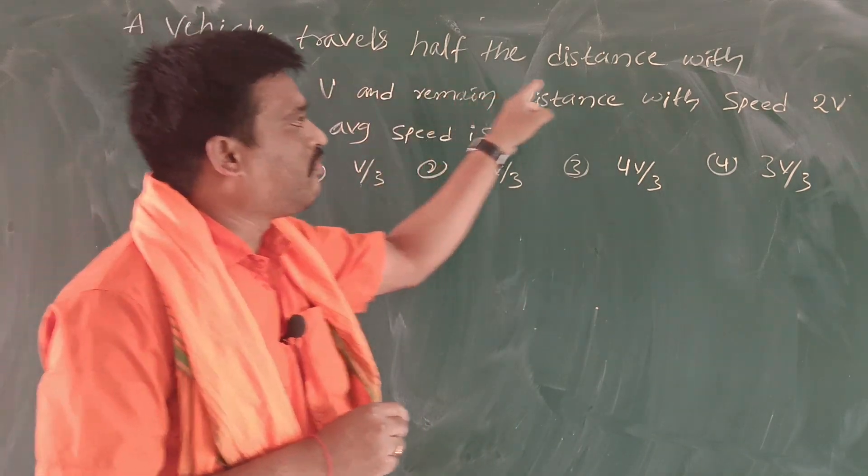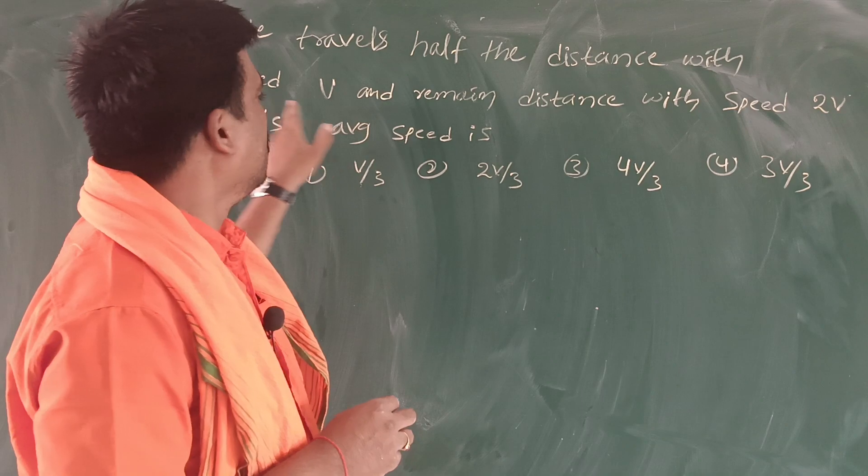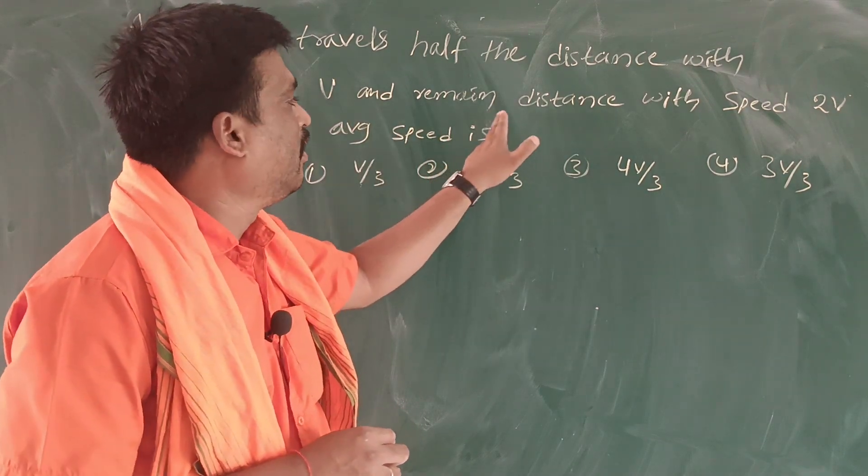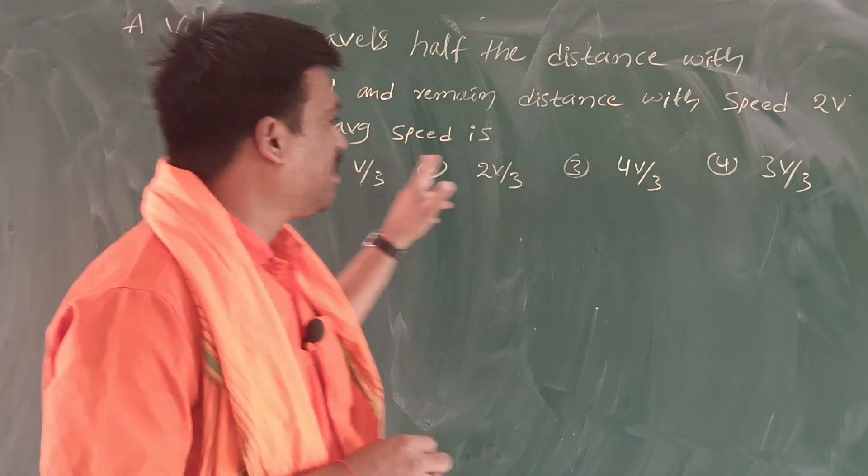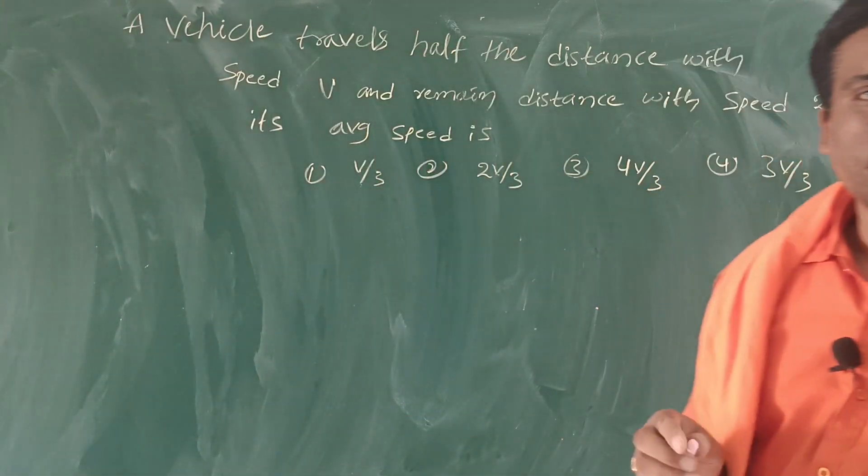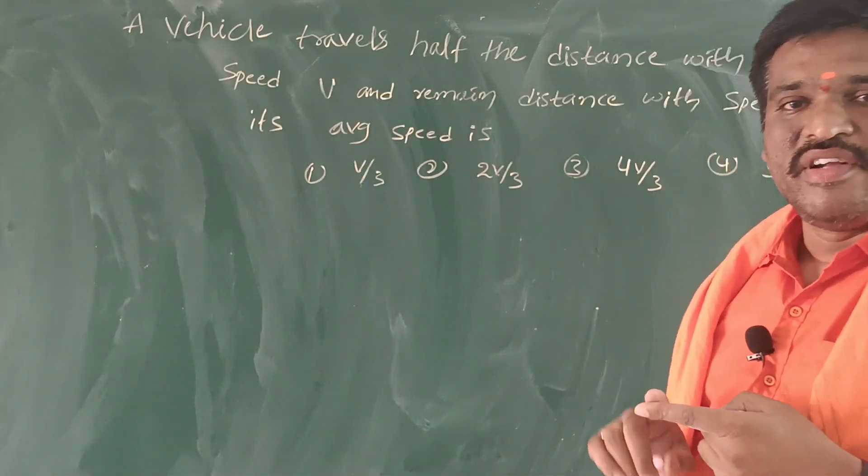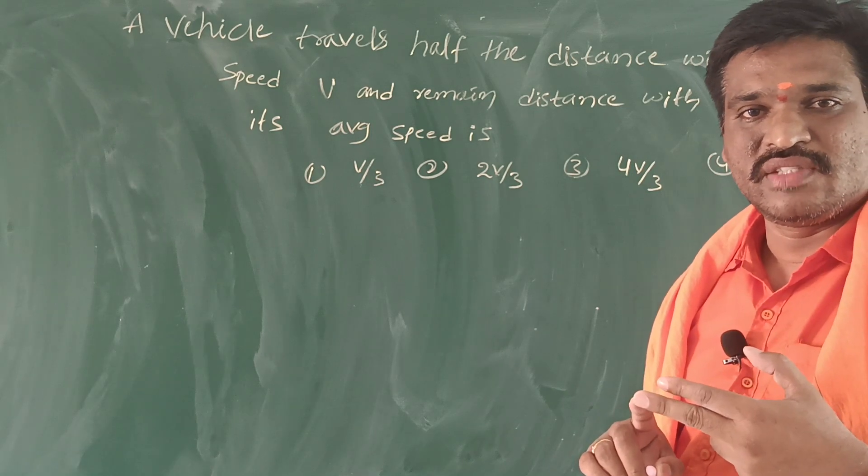A vehicle travels half of the distance with speed v and remaining distance with speed 2v. Its average speed is to be found.